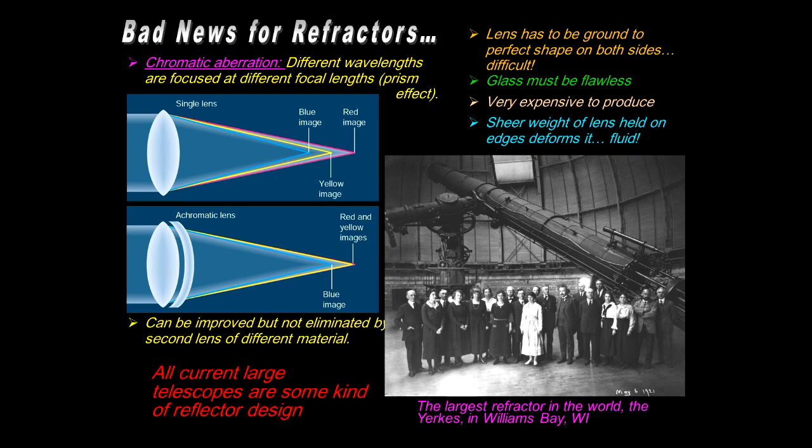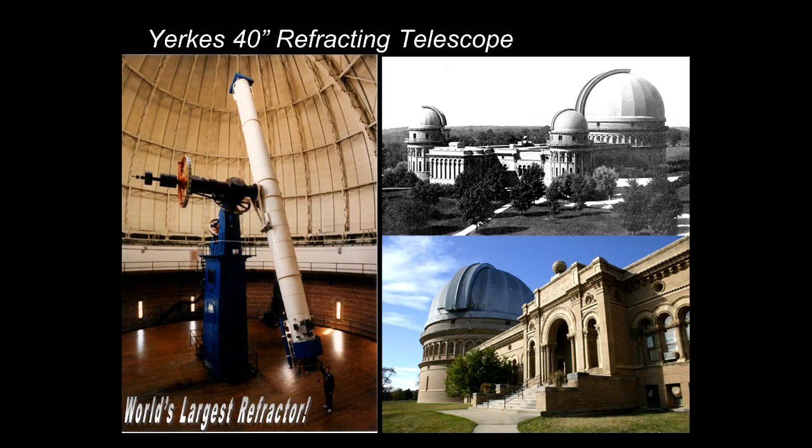Edwin Hubble spent some time observing at the Yerkes Observatory. Now, all current telescopes, the big ones, they're all some kind of reflector design because of these limitations with refractors with the glass. So here is that amazing telescope, and in this huge dome it takes a really big dome to house a telescope.